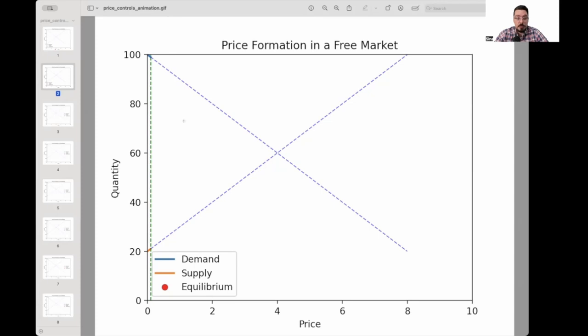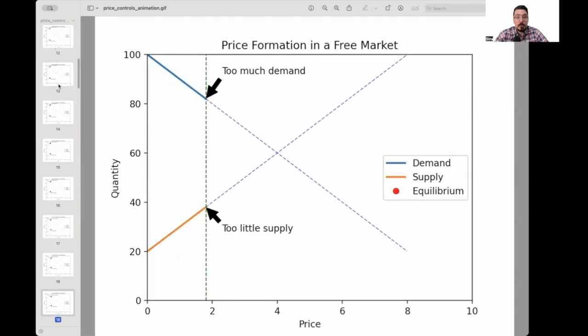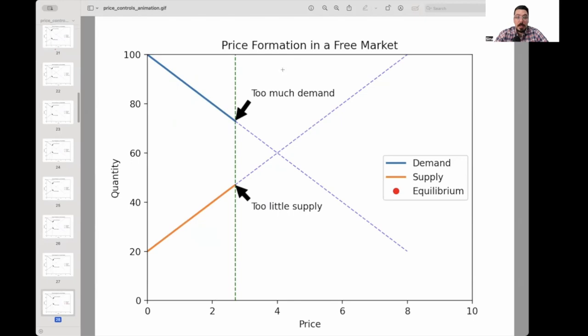So the producers will see the situation, will see the shortage and raise the price from one to two to three to four. And as that happens, the demand comes down, and supply goes up.